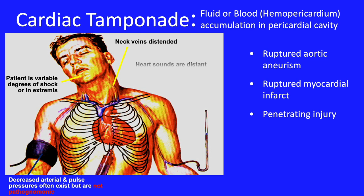Heart sounds, if present, are distant — the fluid in the pericardial cavity is dampening the sounds that can be heard. If venous pressure is taken, it is quite elevated. This is considered the pathognomonic sign of cardiac tamponade.